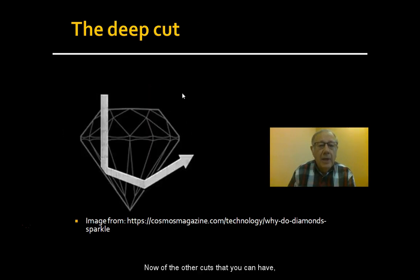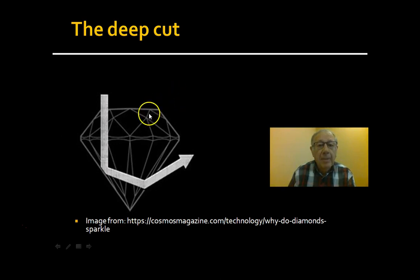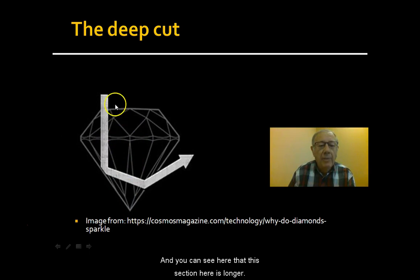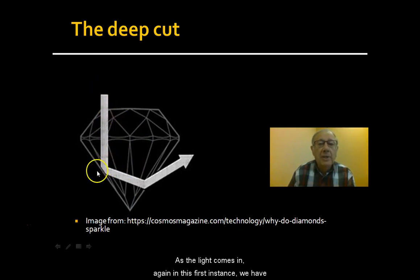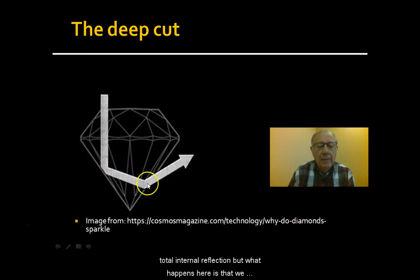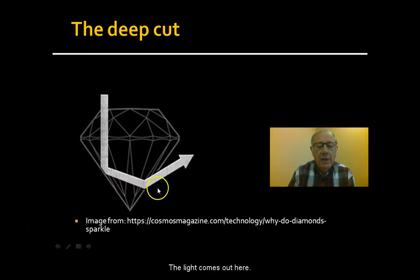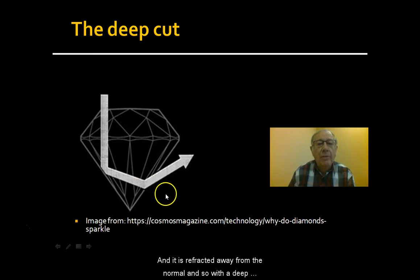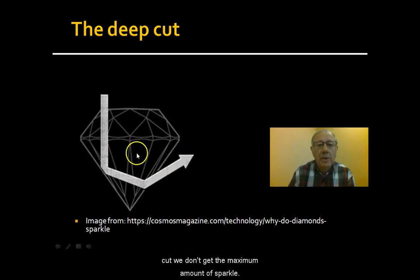That's one feature of the perfect cut. The other cuts you can have include what's called the deep cut. You can see here that this section is longer. As the light comes in, in the first instance we have total internal reflection, but then we have refraction — the light comes out here and is reflected away from the normal.